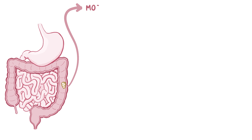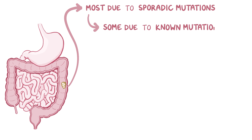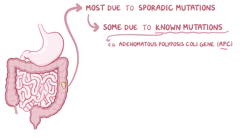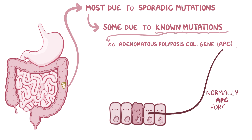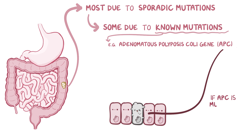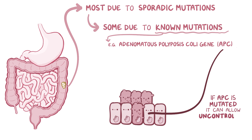Most cases of colorectal tumors happen because of sporadic mutations, but a small number are caused by known genetic mutations that run in a person's family. An example is the adenomatous polyposis coli gene, or APC gene, which is a tumor suppressor gene. Normally, the APC protein identifies when a cell is accumulating a lot of mutations and forces it to undergo apoptosis, or programmed cell death. But when the APC gene is mutated, the mutated bowel cells don't die, and instead some start dividing uncontrollably, giving rise to polyps.